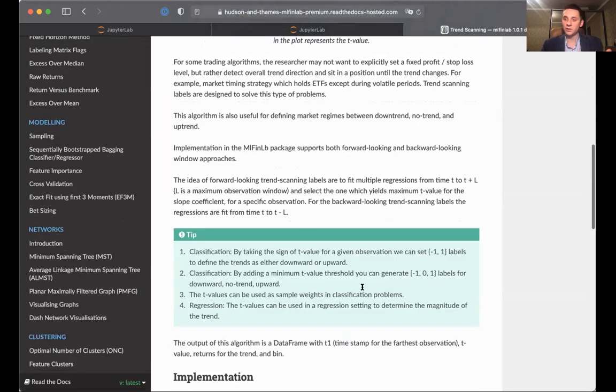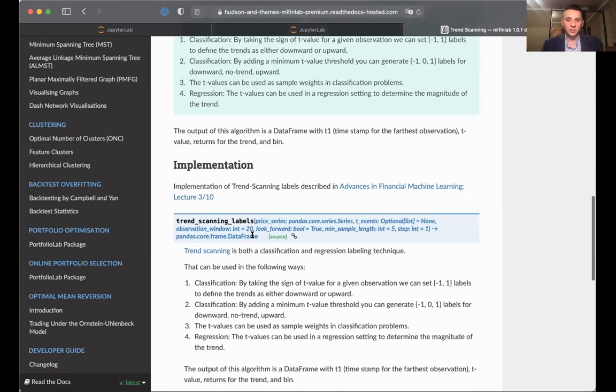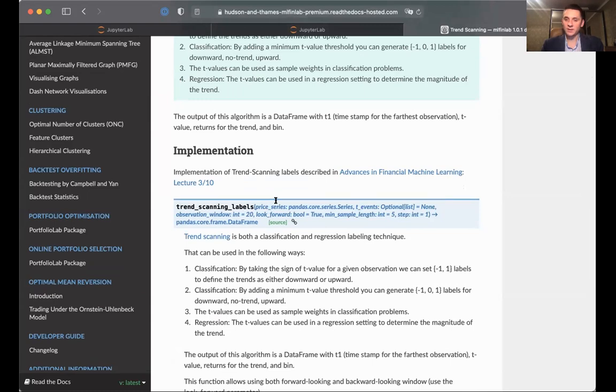Let's take a look at the function signature. Trend-scanning labels takes a price series as input and t_events, meaning that we would like to filter out only filtered events. If the t_events list or series equals none, in this case we will try to label each sample from the price series.